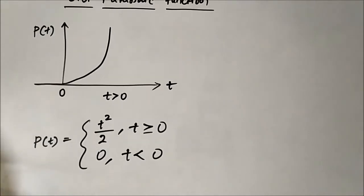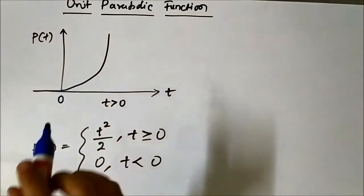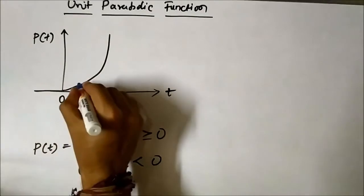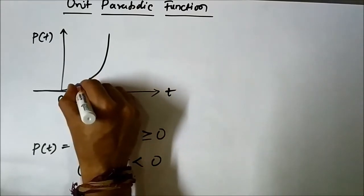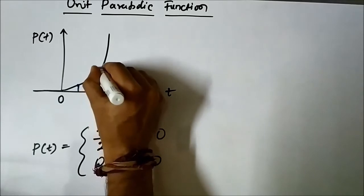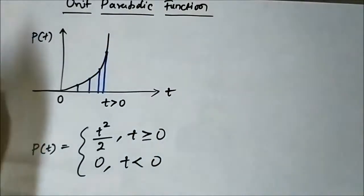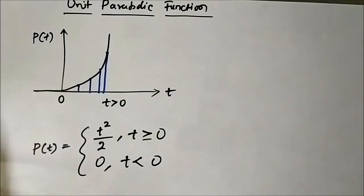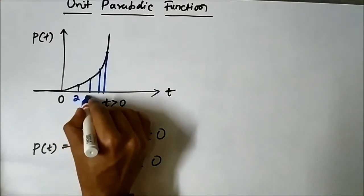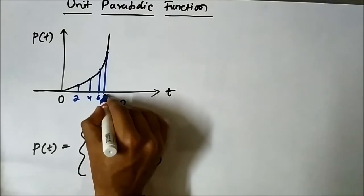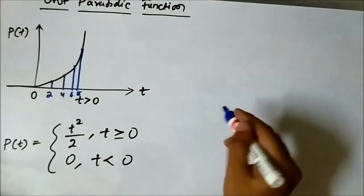Suppose we have to convert it into a discrete time sequence. We have to take samples of the unit parabolic function at specific equidistant points called sampling instances, following the Nyquist sampling theorem, which states that the sampling frequency must be greater than or equal to twice the maximum signal frequency. Let the sampling instances be 2, 4, 6, and 8. The discrete time sequence representation of the unit parabolic sequence will look something like this.